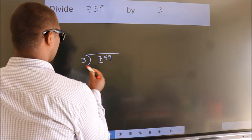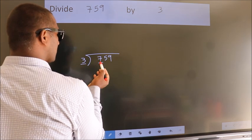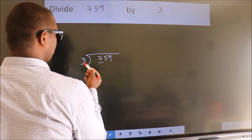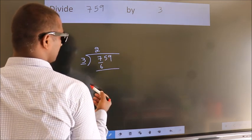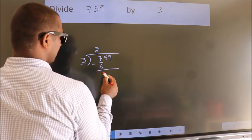Here we have 7. Here 3. A number close to 7 in the 3 table is 3 times 2 is 6. Now we should subtract. We get 1.